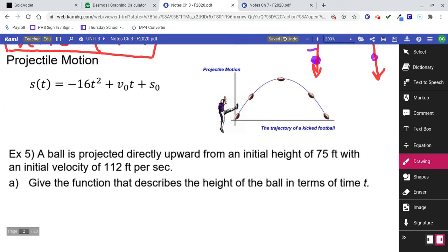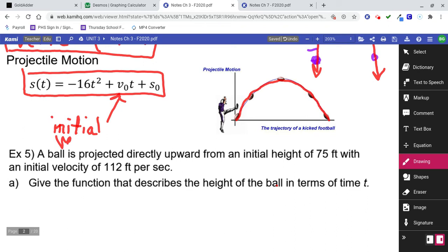Next, projectile motion. A lot of problems in algebra can be modeled by this. You've got, in this example, a football being kicked up in the air. And notice that football takes the flight path of a parabola. So a lot of these questions can be answered by thinking about parabolas. Now look at this equation. This is kind of your general form. But what you need to notice is this is initial velocity of the ball, and this is initial height.